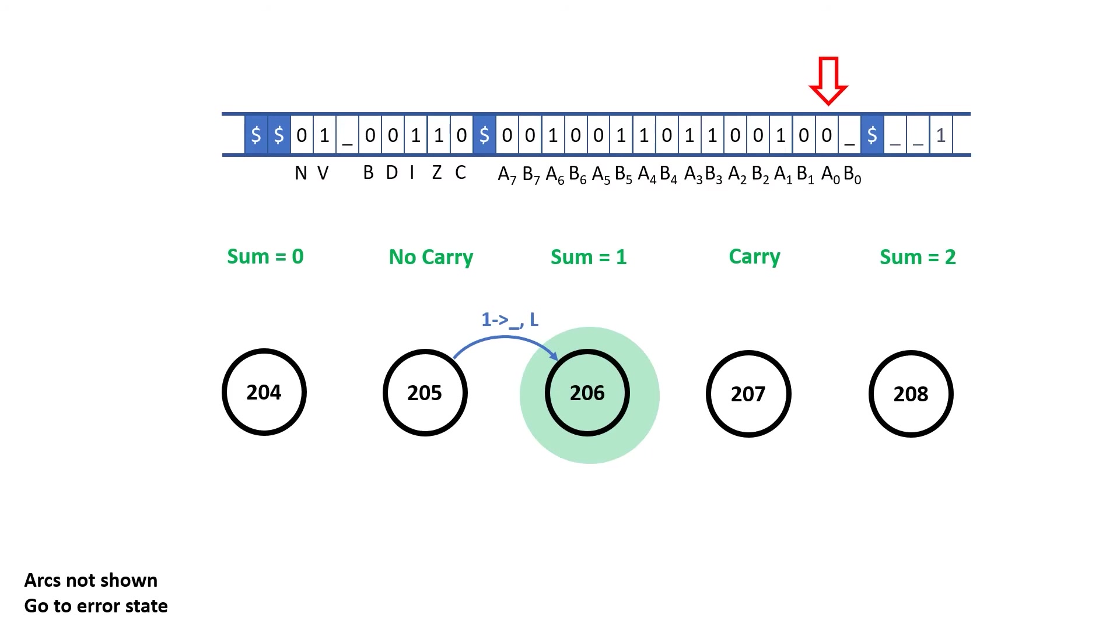I read the notepad, it contains a zero, so I look for an arc containing a zero out of rule 206. And how lucky am I? I just found one. As this says write a one, move left and go to rule 205. This time I read a zero off the notepad and now I need to find an arc containing a zero out of rule 205. And there we go. I write an underscore, move left and go to rule 204.